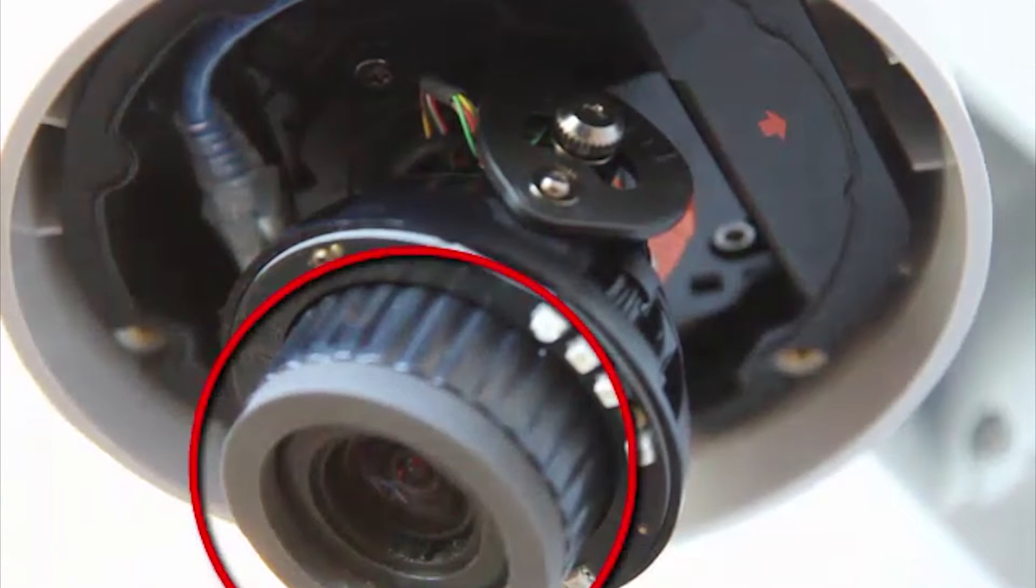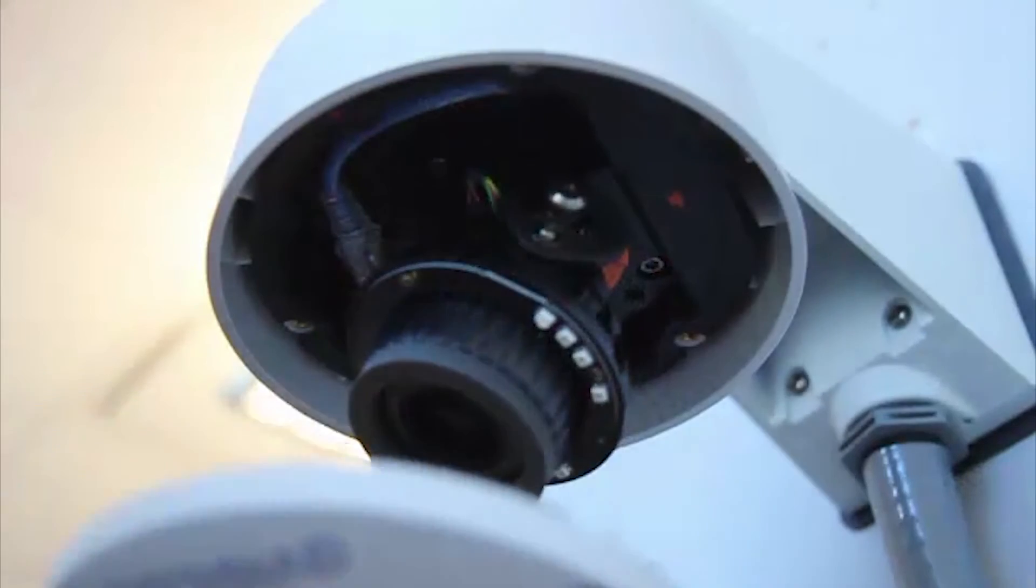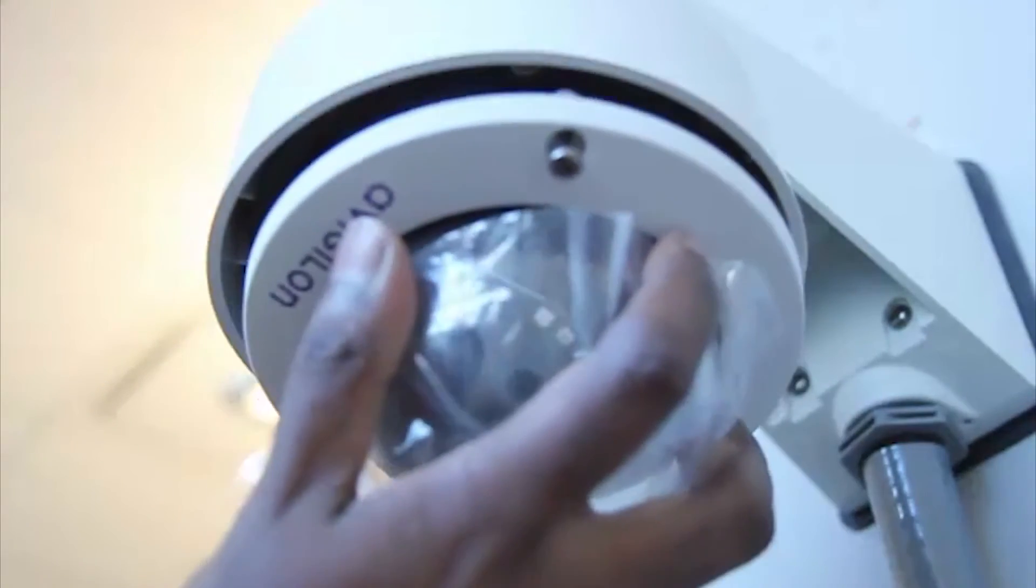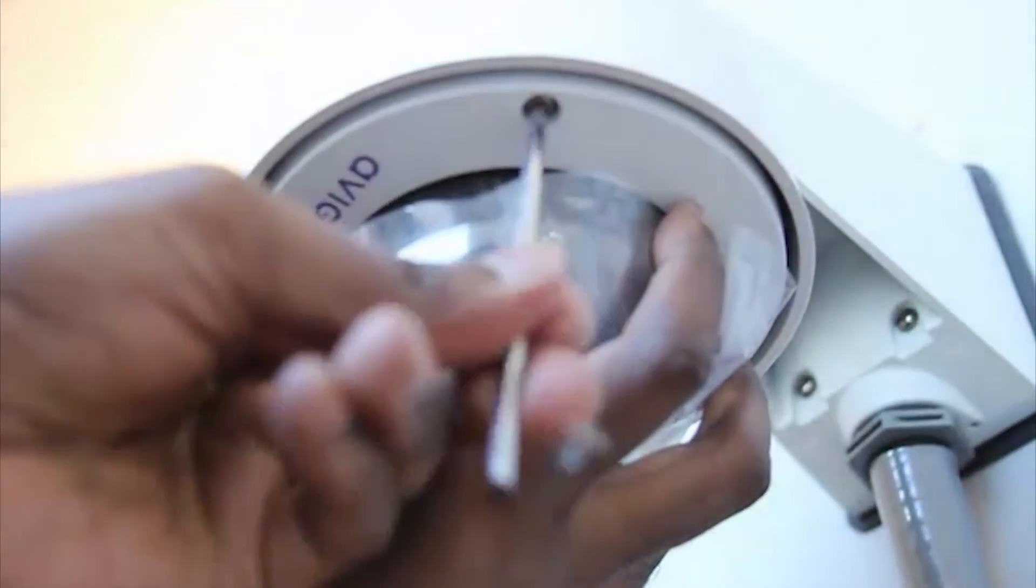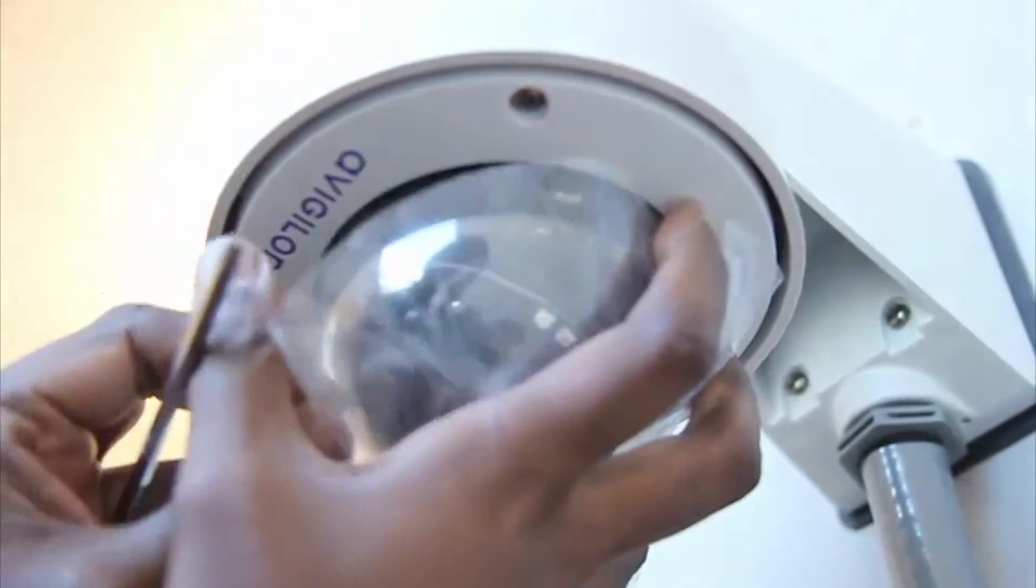Rotate the azimuth control ring to set the image to the correct angle. Next, attach the dome cover to the base by tightening the screws with the Torx driver. Remove the protective cover on the outside of the dome bubble.